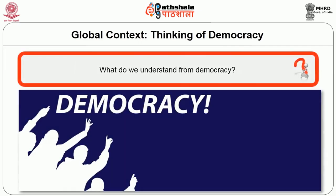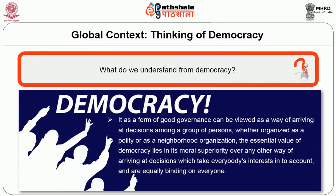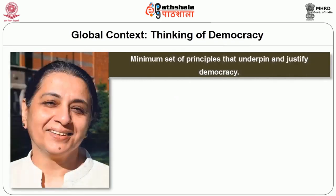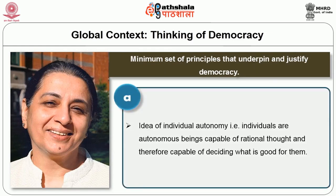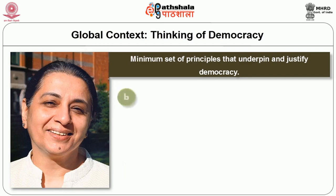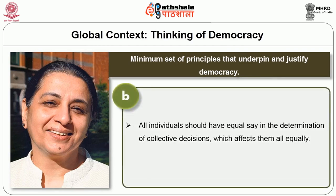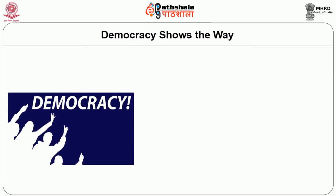How do we understand democracy? Democracy as a form of good governance can be viewed as a way of arriving at decisions among a group of persons. The essential value of democracy lies in its moral superiority over any other way of arriving at decisions which take everybody's interest into account and are equally binding on everyone. The minimum set of principles underpinning democracy are: first, the idea of individual autonomy — individuals are autonomous beings capable of rational thought and deciding what is good for them; and second, all individuals should have equal say in collective decisions that affect them equally.